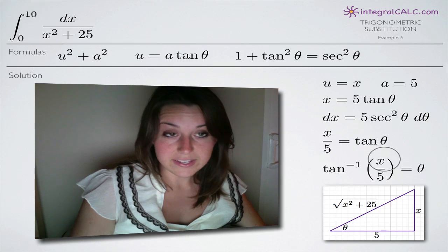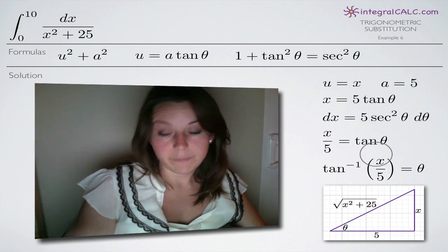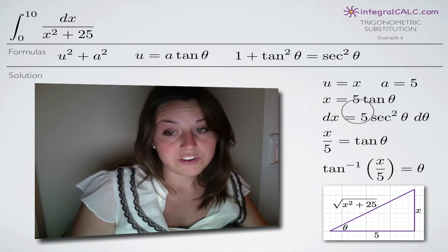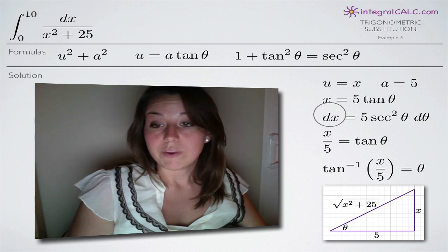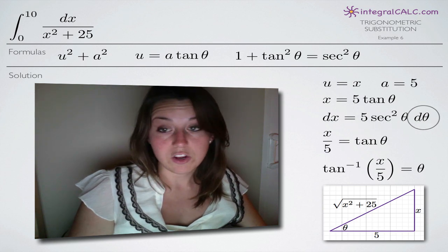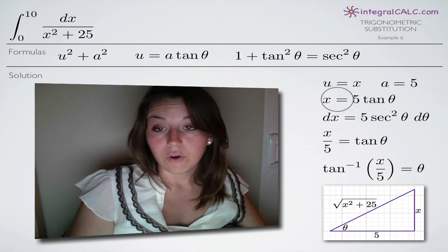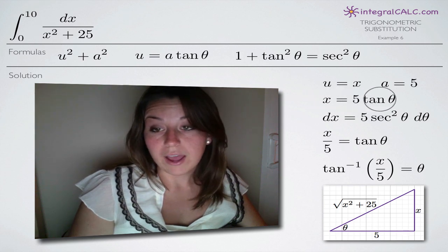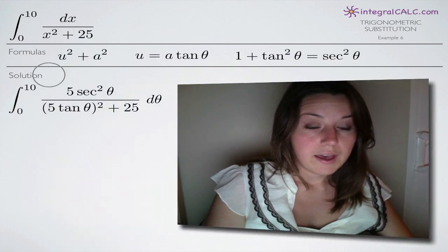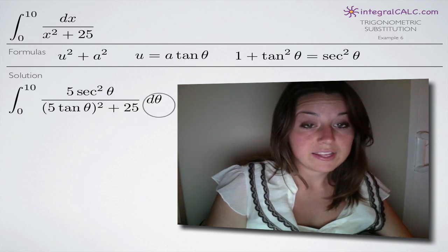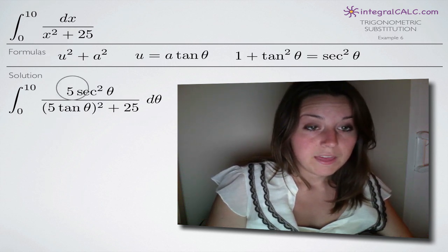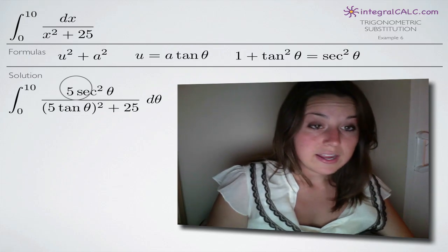Now that we've got everything set up, let's plug into our integral and make substitutions. We have dx in our original integral, which we solved as 5 secant squared of theta d theta — that goes in the numerator. We also substitute 5 tangent of theta in place of x in the denominator. So we put in 5 secant squared of theta d theta for dx, and 5 tangent of theta for x. Those are the two substitutions we made.